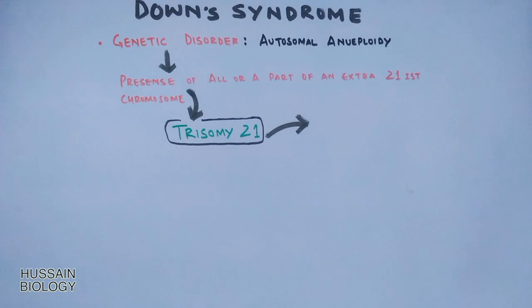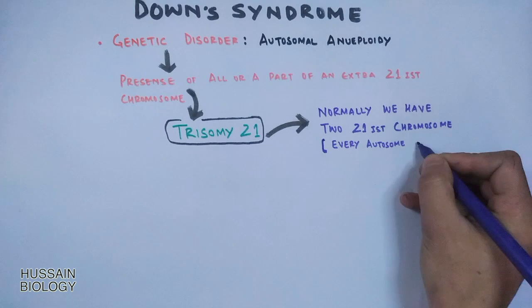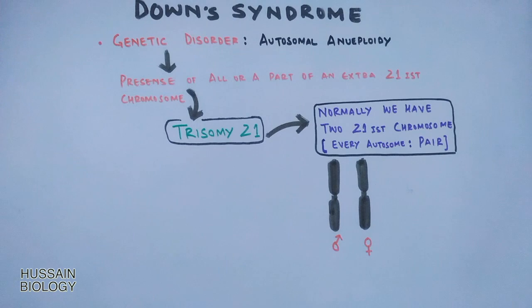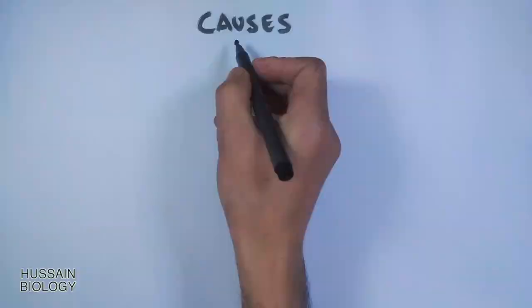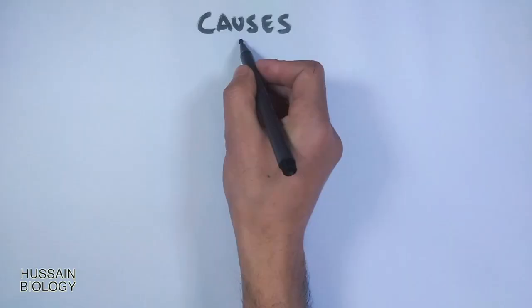Normally we have two 21st chromosomes — all 22 autosomes occur in pairs, one from father and one from mother. But in the case of trisomy 21, the 21st chromosome occurs three times; we get three copies of the 21st chromosome — two from one parent and one from the other. Mostly in Down syndrome we get one copy from the father and two copies from the mother.